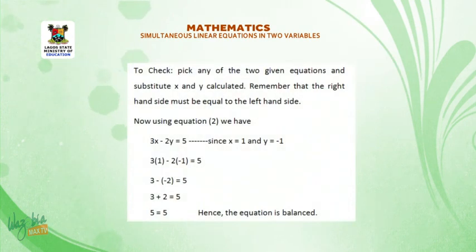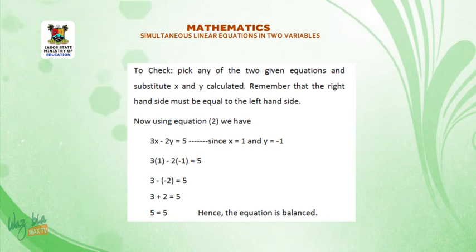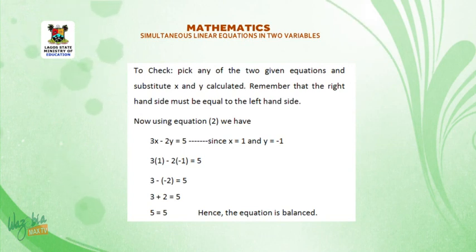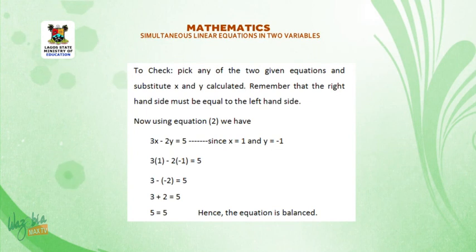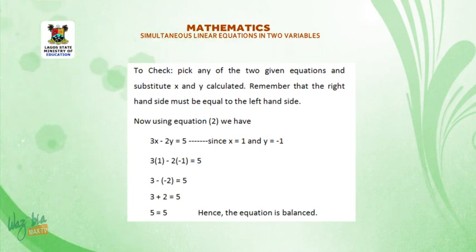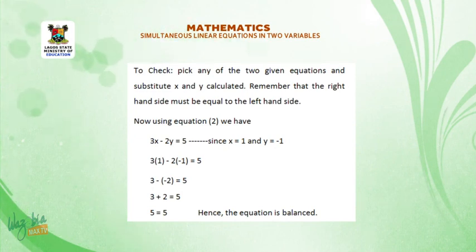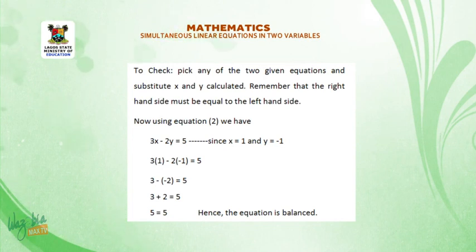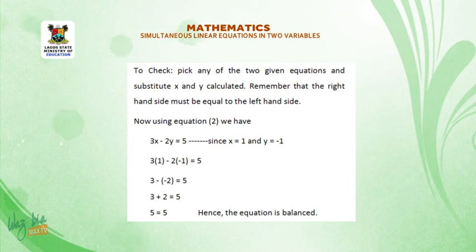To check, pick any of the two given equations and substitute the calculated values of x and y. Remember that the right-hand side must be equal to the left-hand side. Now, using equation 2: 3x minus 2y is equal to 5. Since x is equal to 1 and y is equal to minus 1, we have 3(1) minus 2(−1) is equal to 5, so 3 plus 2 is equal to 5. 5 is equal to 5. Hence, the equation is balanced.